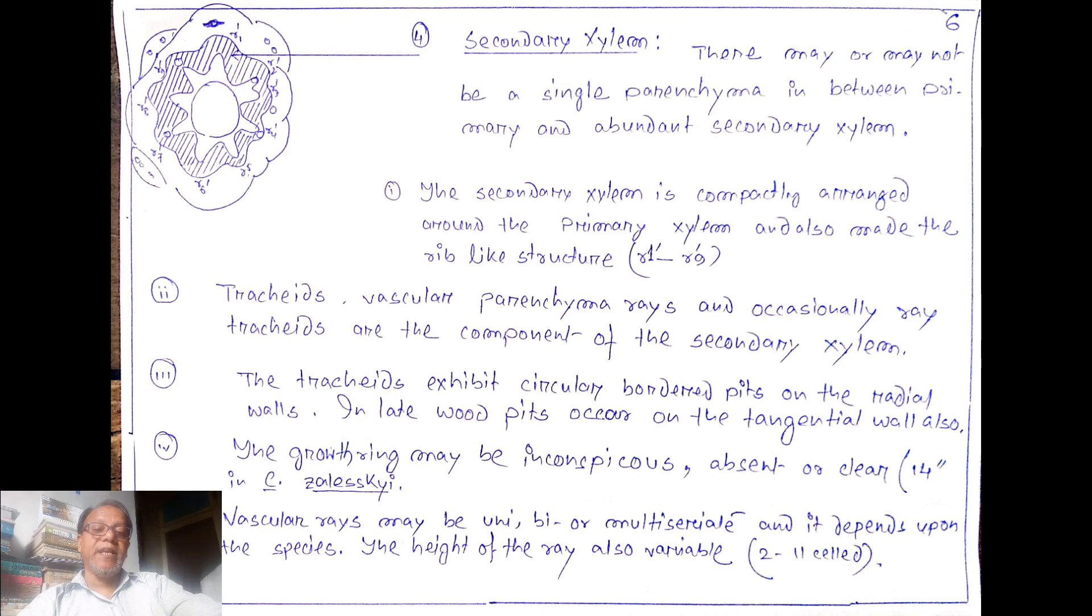Tracheids, vascular parenchyma rays, and occasionally ray tracheids are the components of the secondary xylem. The tracheids exhibit circular bordered pits on the radial walls. The late wood pits occur on the tangential wall also. Since it is termed as late wood, we may say about the growth ring. The growth ring may be inconspicuous or absent, but in Callixylon zalesskyi it is clear. The vascular rays may be uni, bi, or multiseriate and it depends upon the species and its length or height is also variable, 2 cells to 11 cells.